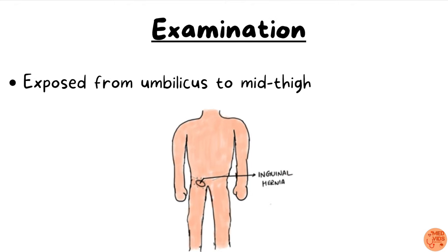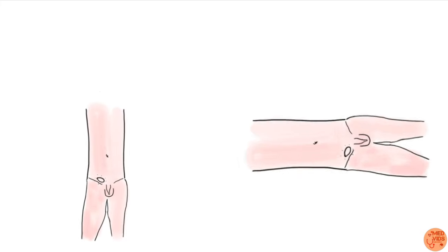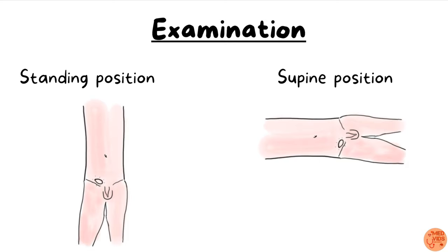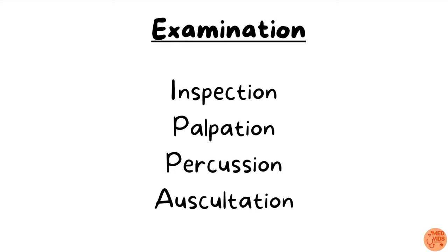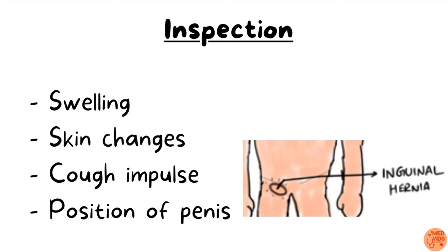Clinical examination is the most important part of inguinal hernia. First, obtain consent from the patient, explain what you are going to do, and with their permission expose the patient from the umbilicus to mid-thigh. Examination is done in two positions — standing and supine — and under the following headings: inspection, palpation, percussion, and auscultation. During inspection, note characteristics of the swelling, skin changes, presence of cough impulse, and position of the penis.